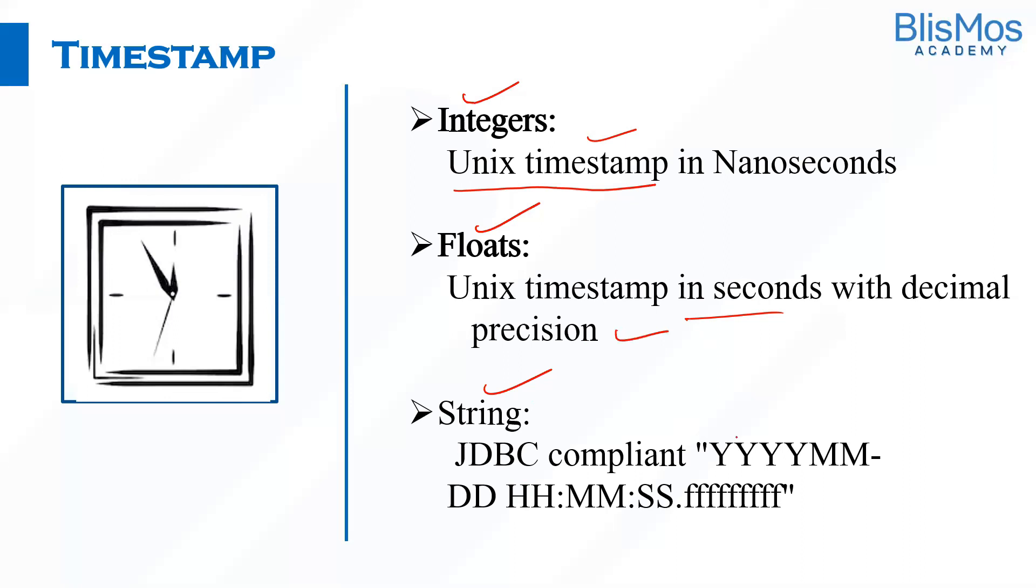In floats we can store Unix timestamp in seconds along with decimal precision. We also store timestamp as strings. In the big data world, we usually store timestamp as a string because it is easy to manipulate. Whenever we want to store data, we store timestamp as a string, but whenever we want to do calculations, that is when we convert the string into timestamp.